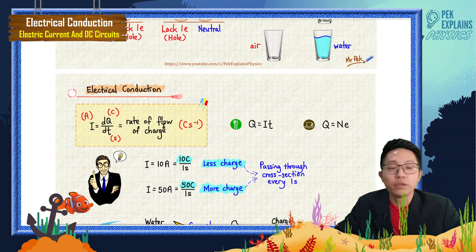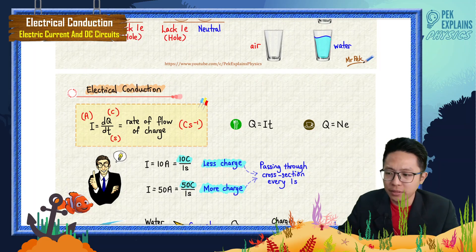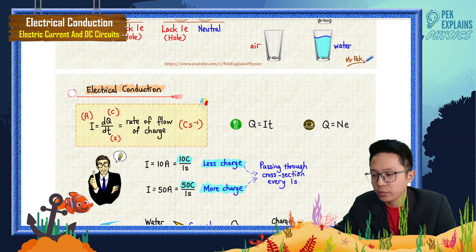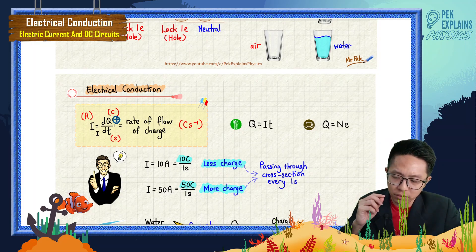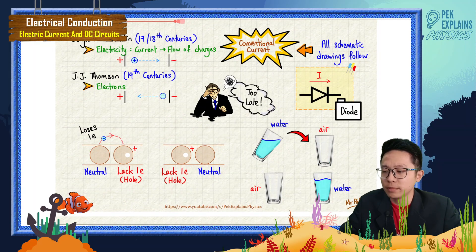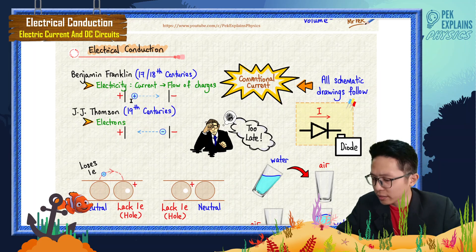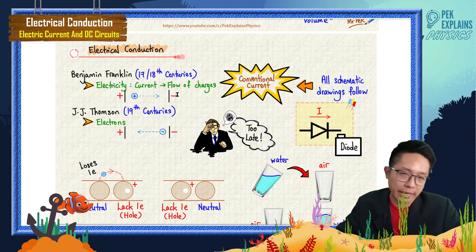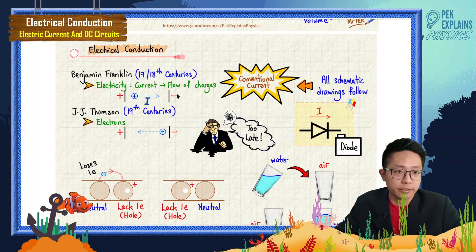Current is the rate of flow of charges. Because at that time he only thought about positive charge and never discovered electrons, the charge in this formula was regarded as positive charge. He thought that positive charge moves from the positive plate to the negative plate, and that is the current — the flow of positive charge.